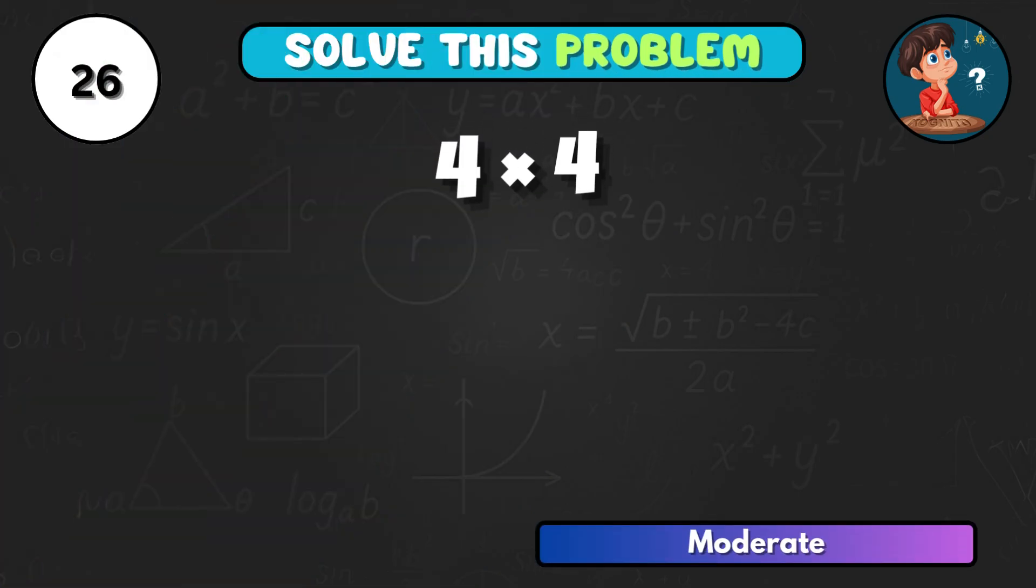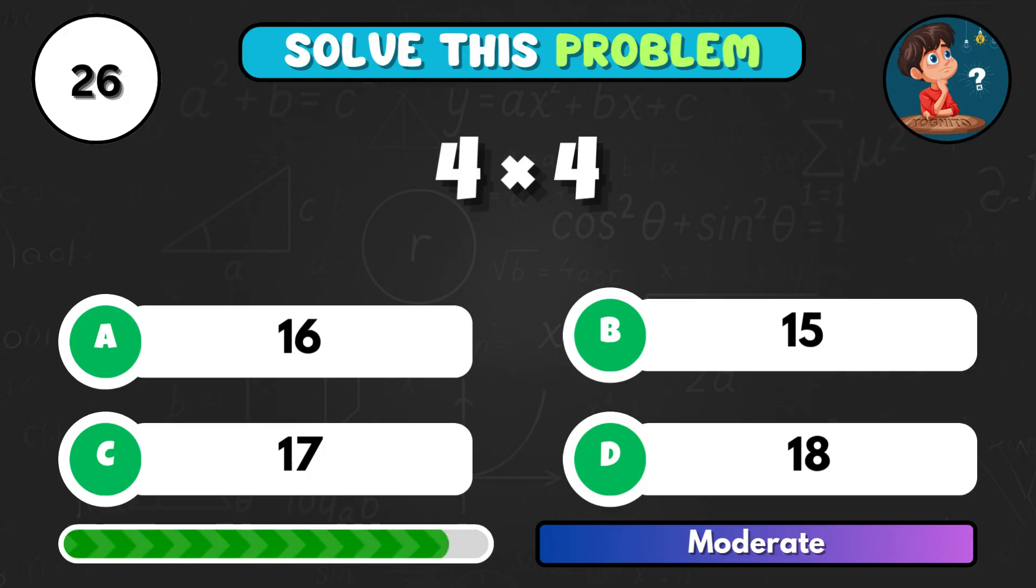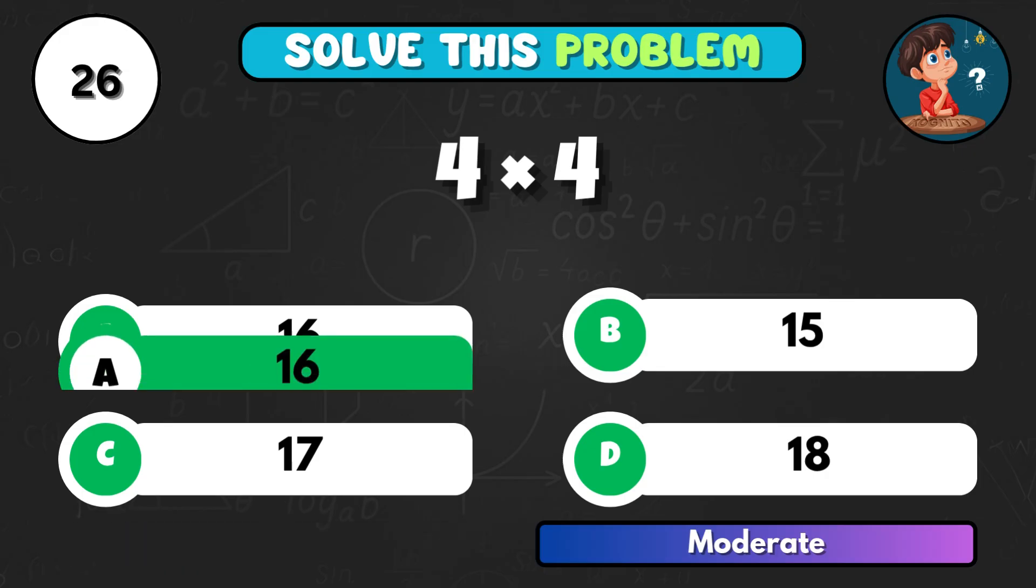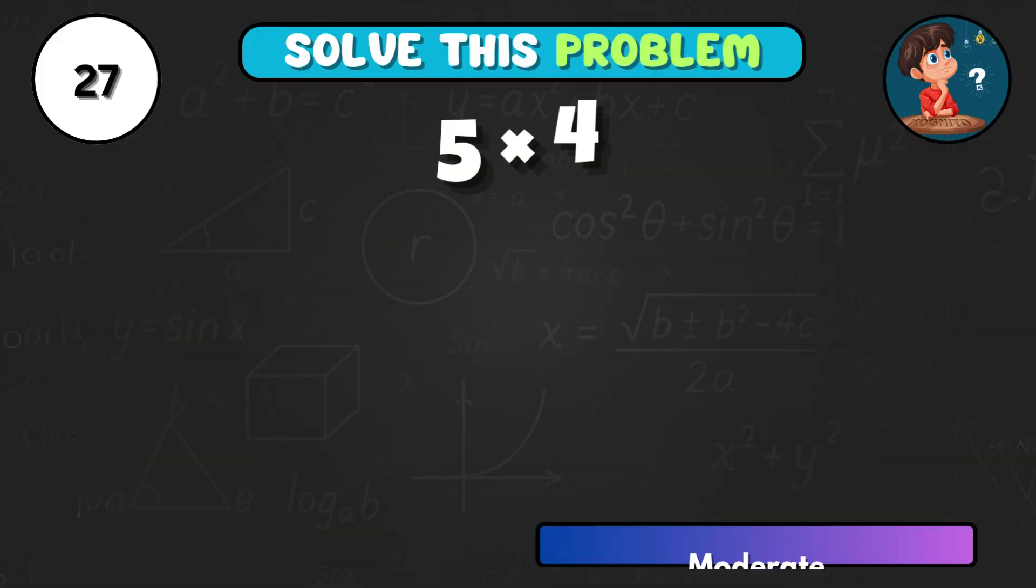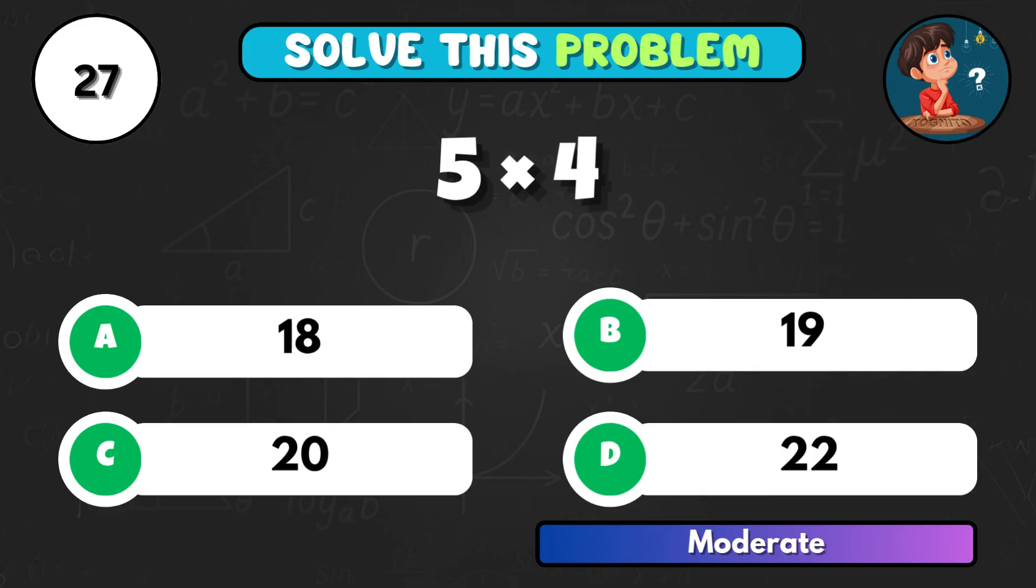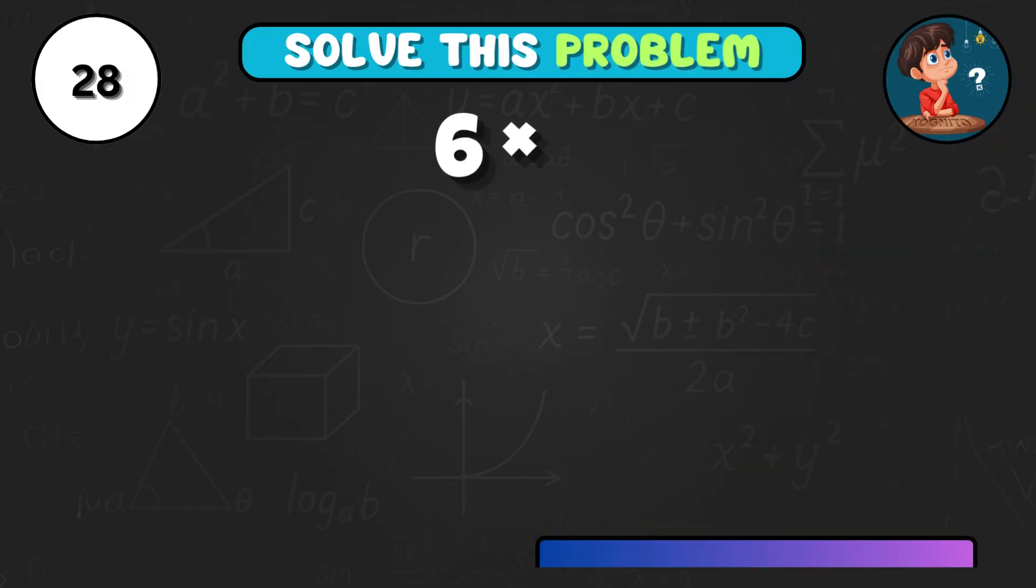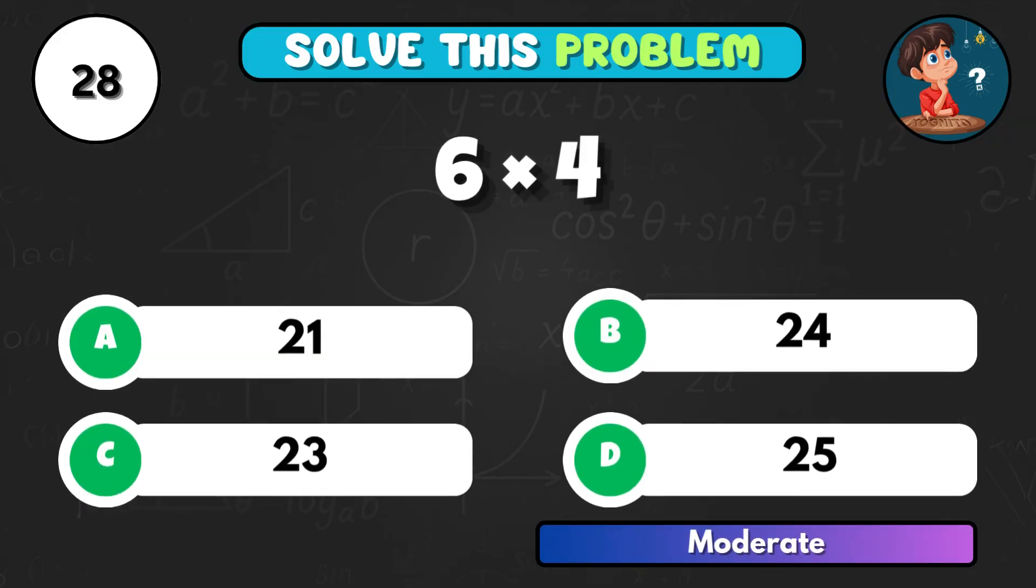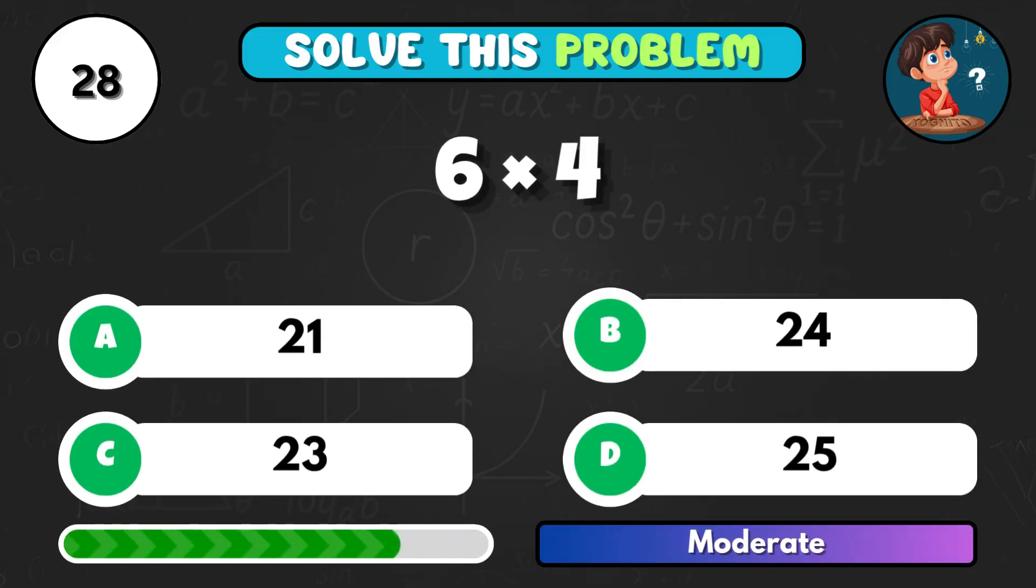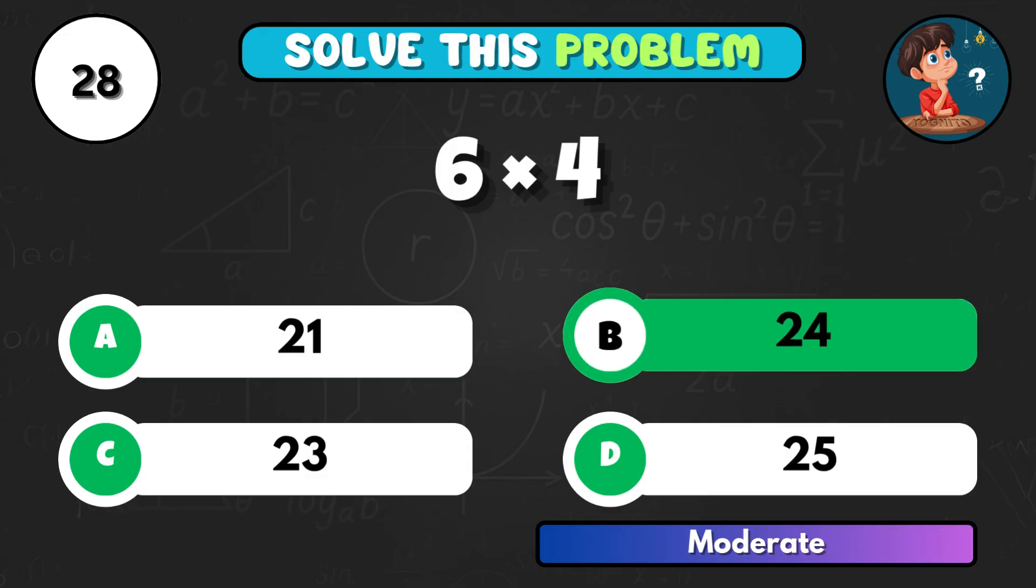4 times 4, what do you get? And correct letter A equals 16. 5 multiplied by 4, what's the product? Option C, making 20. 6 times 4, try this one. That's B equals 24.